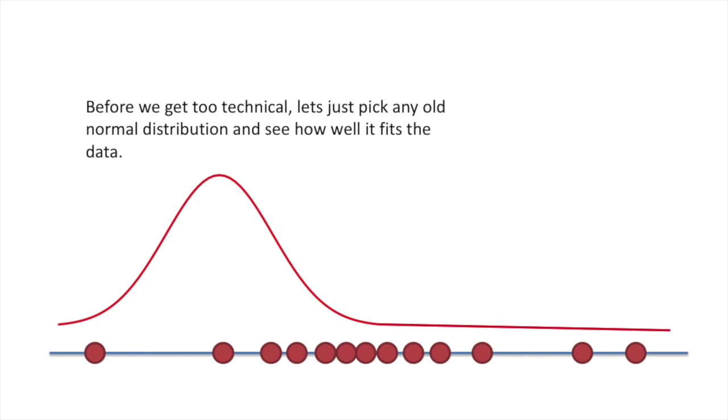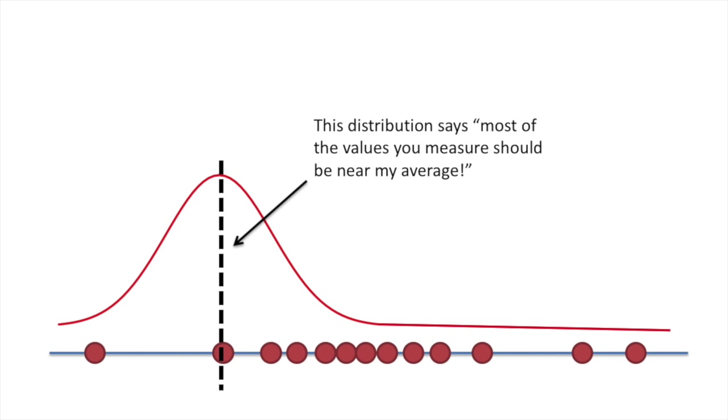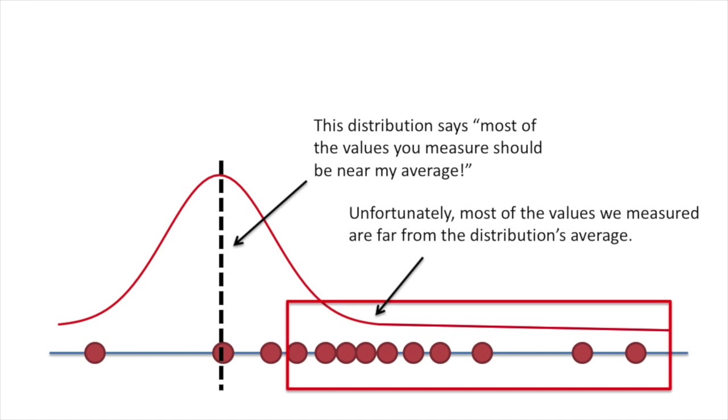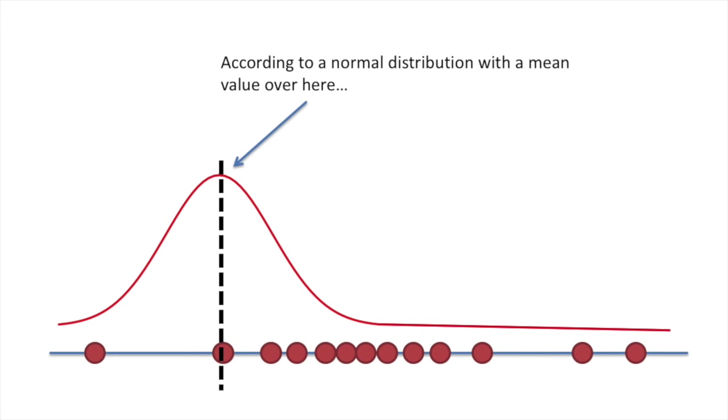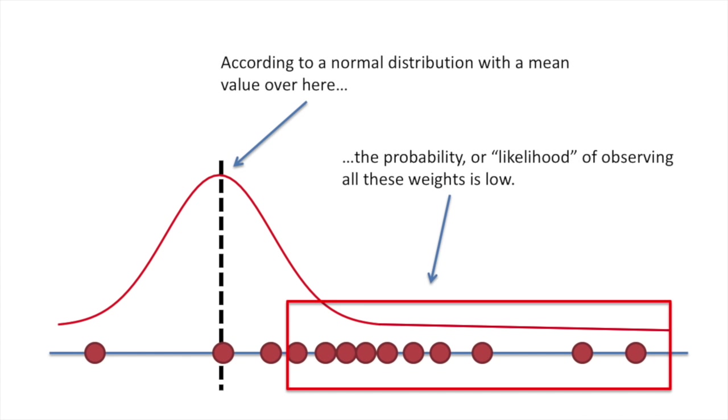Before we get too technical, let's just pick any old normal distribution and see how well it fits the data. This distribution says most of the values you measure should be near my average. The distribution's average is the black dotted line. In this case, that's different from the average of the actual measurements. Unfortunately, most of the values we measured are far from the distribution's average. According to a normal distribution with a mean value over here, the probability or likelihood of observing all these weights is low.